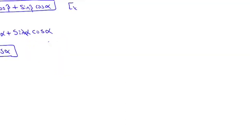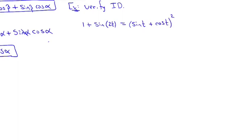Let's do an identity verification. We want to show: 1 + sin(2t) = (sin t + cos t)². You could use x instead of t — anytime you don't like the variable a book gives you, you can change it, as long as you note that you changed it. So foil out the right side — rewrite it as (sin t + cos t)(sin t + cos t).